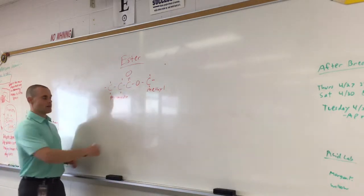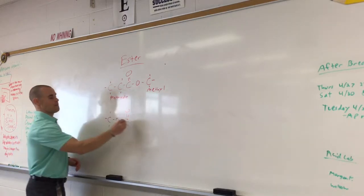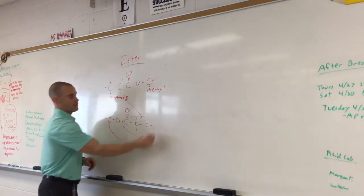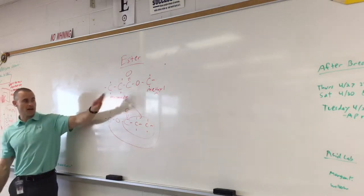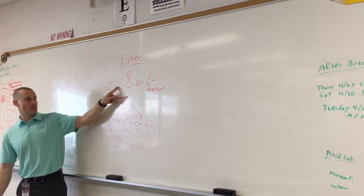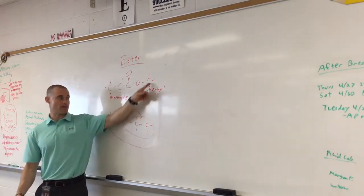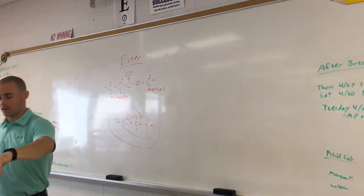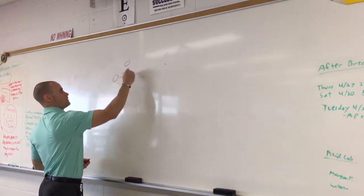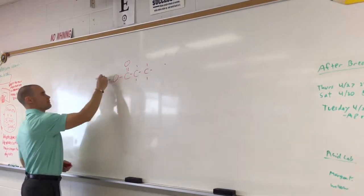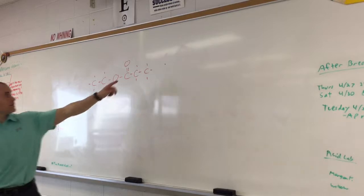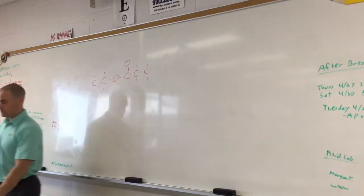Your main chain gives you the '-oate' ending, and whatever is attached to the oxygen gives you the '-yl' ending. If the Regents flips it on you and draws it in reverse, it's still the same — this is your propanoate and this is your methyl. The best we can do is just practice. The main chain is usually your '-oate': one, two, three — that's your propanoate. Substituents go in front of the name — that's the methyl or ethyl. So I'll draw one on the board and see if you can name it.